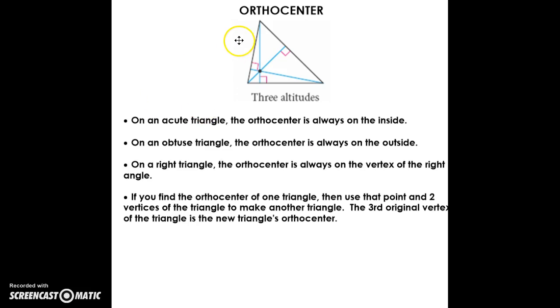The orthocenter has different locations depending on what type of triangle. This one right here is an acute triangle. The orthocenter will be on the inside. On an obtuse triangle where we have one angle bigger than 90, the orthocenter would be on the outside of the triangle. On a right triangle, it would be on the right angle, right at the corner. When you find the orthocenter and use that point and two corners of the triangle to make another triangle, the third original vertex of the triangle is the new triangle's orthocenter.